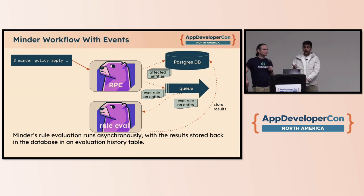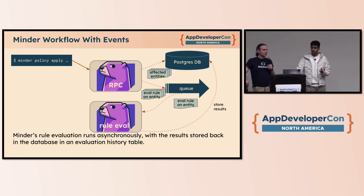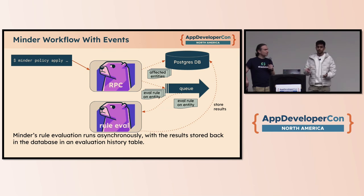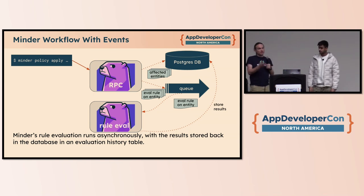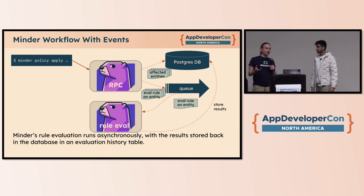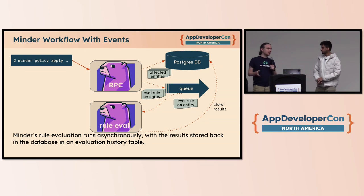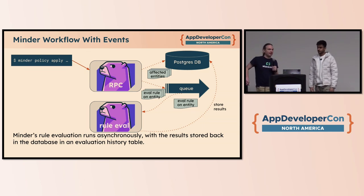There's a rule evaluation section inside Minder. Minder supports Rego to specify rules, JQ, and other cool stuff. You can have your own custom rule evaluated using Rego functions. That rule is evaluated and the result is stored in the Postgres database. Minder's rule evaluation runs asynchronously and the results are stored back in the evaluation history table. When we say evaluation, we mean: go out and fetch data from GitHub about what branch protection is there and verify it's valid, or clone a git repository and check that the workflows match some policy. 'Don't use pull_request_target' is a simple security rule that a lot of people struggle with.